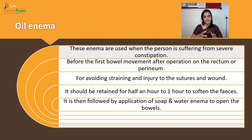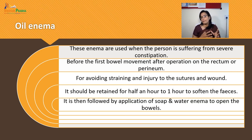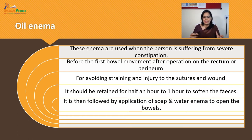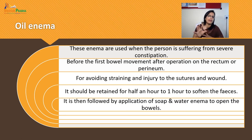Oil Enema is used when a person is suffering from severe constipation, or before the first bowel movement after an operation on the rectum or perineum. It is used to avoid straining and injury to sutures or wounds after surgical operations. The oil should be retained for half an hour to one hour to soften the fecal matter, then followed by soap and water Enema to open the bowel movement.